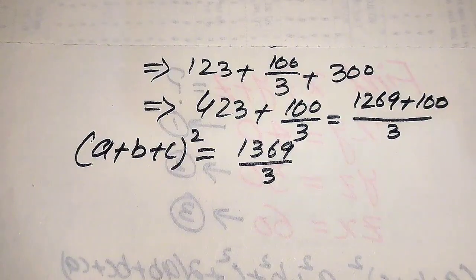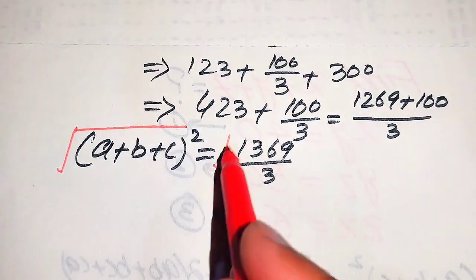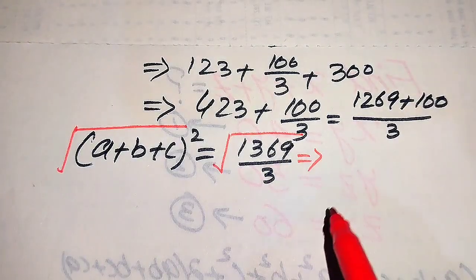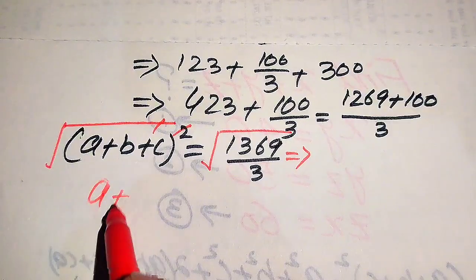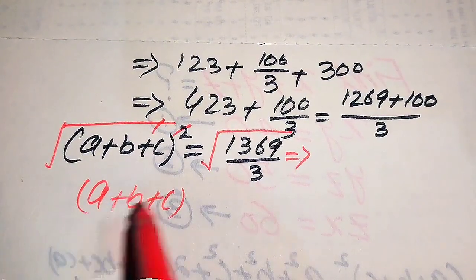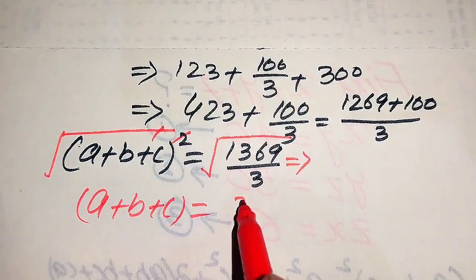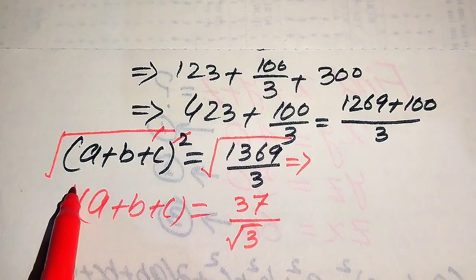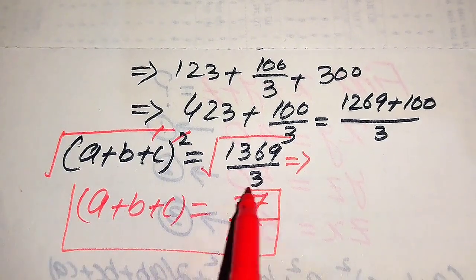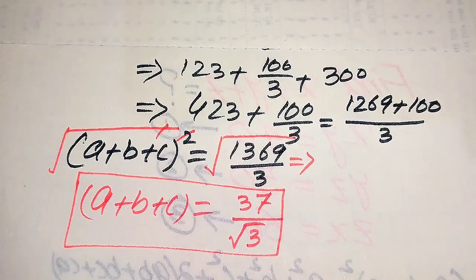Our target is to find the value of A plus B plus C, so we take the square root on both sides. The square root of 1369 is 37, so A plus B plus C equals 37 divided by the square root of 3. This is the final value of A plus B plus C, which is our required answer. Thank you so much for watching this video. Please subscribe to my channel for more exciting videos.